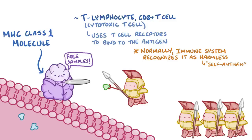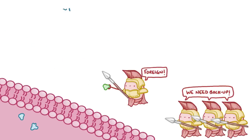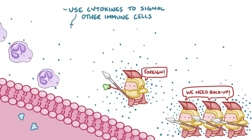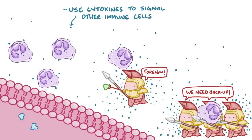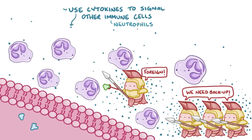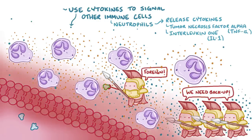But when these cells recognize a foreign molecule, they use cytokines to signal other immune cells to migrate to the joint capsule in the joint space that's under attack, cells like neutrophils. The neutrophils release cytokines like tumor necrosis factor alpha, or TNF-alpha, and interleukin 1, or IL-1, which worsen the inflammation.